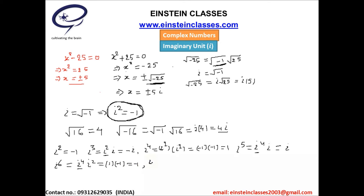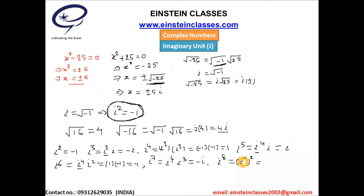For i to the power 7, written as i to the power 4 times i cubed: i to the power 4 equals 1 and i cubed equals minus i, so i to the power 7 equals minus i. For i to the power 8, written as the square of i to the power 4: since i to the power 4 is 1, i to the power 8 equals 1.